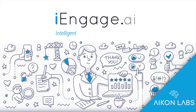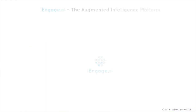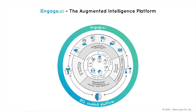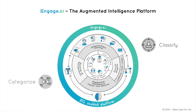iEngage is an intelligent interactions management platform made up of APIs. The platform captures interactions from multiple channels and utilizes artificial intelligence to classify, categorize, extract, and reuse intelligence within interactions.